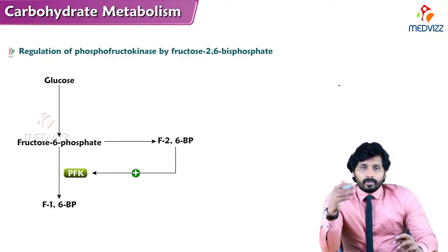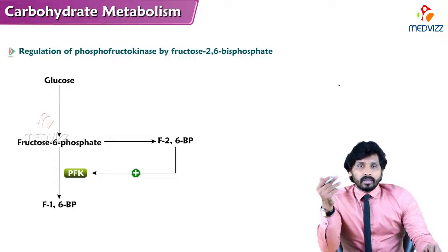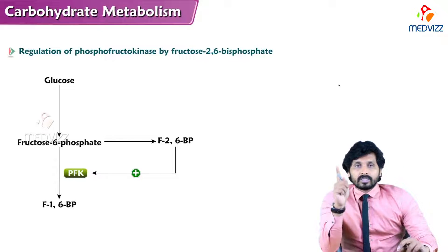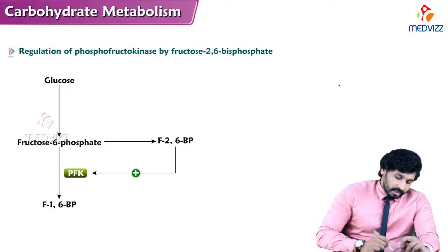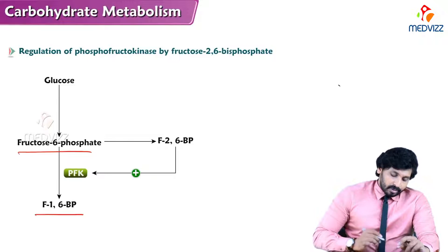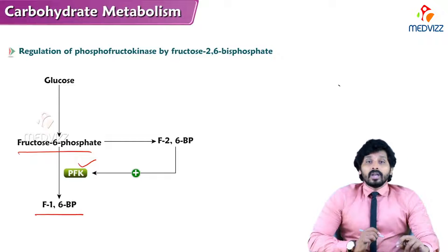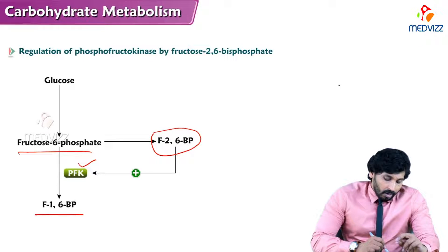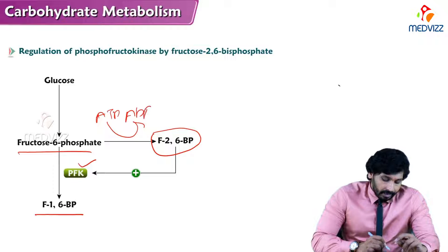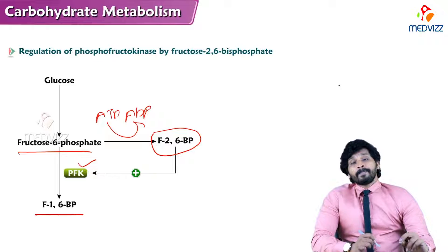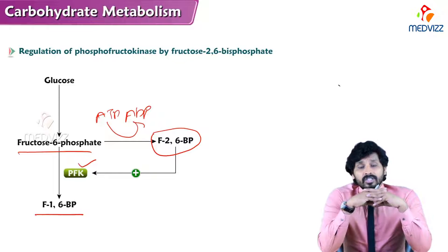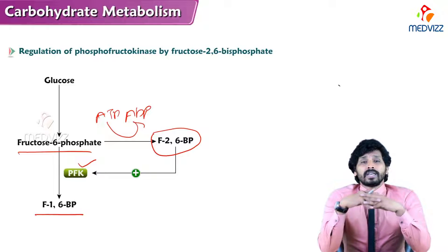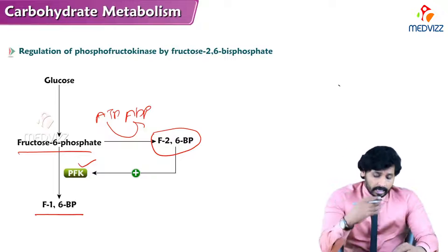Now we will look at the mechanisms one by one. The most important regulatory step is where fructose-6-phosphate is converted to fructose-1,6-bisphosphate by PFK1. Fructose-2,6-bisphosphate is formed when ATP adds a phosphate group to fructose-6-phosphate, and fructose-2,6-bisphosphate acts as a positive modulator of PFK1, increasing the rate of glycolysis.